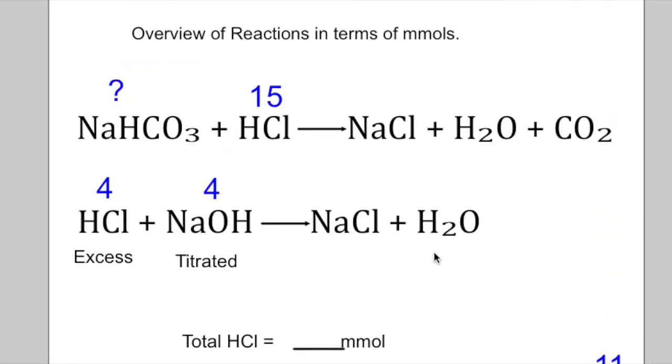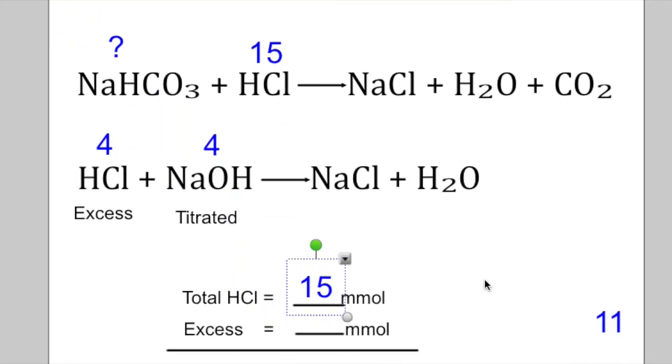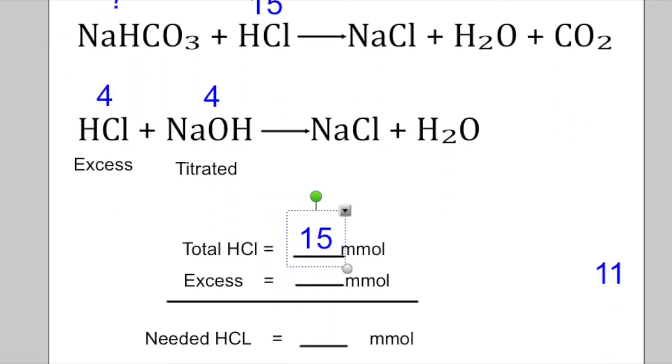So if we scroll down a bit, let me get this number. We know we had 15 millimoles to start with. Our excess is 4 millimoles of excess HCl. So that must have meant we needed 11 millimoles.